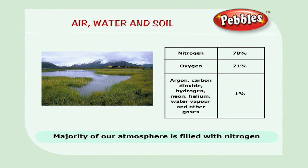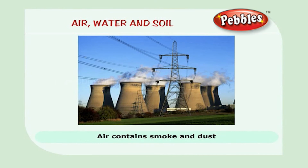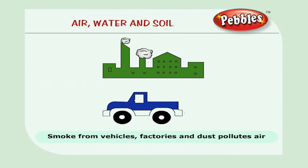Majority of our atmosphere is filled with nitrogen. The amount of water vapor in the air is called humidity. Air may contain smoke and dust — this is called pollution. The smoke from vehicles, factories and dust pollutes the air.